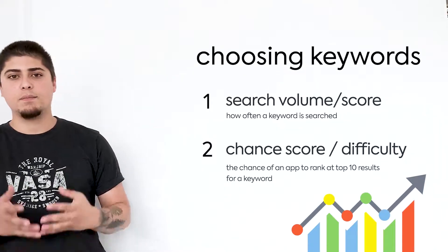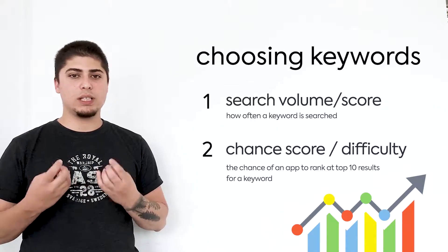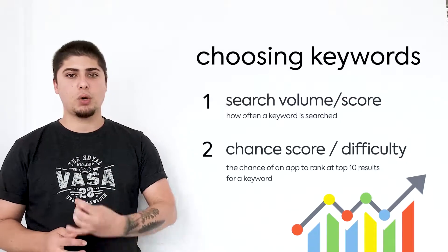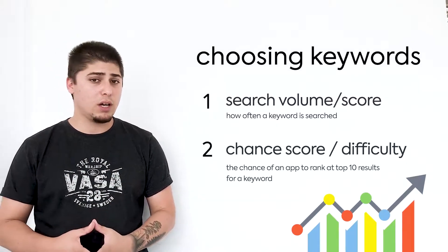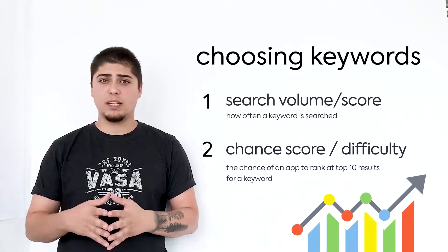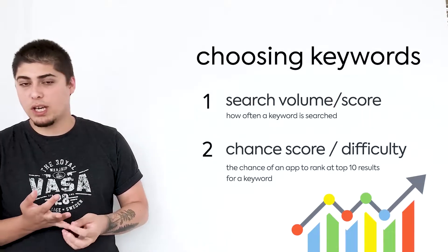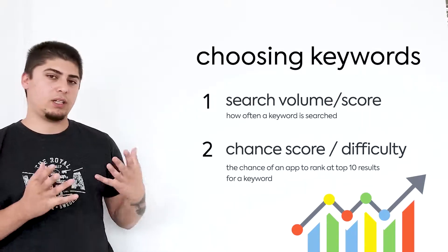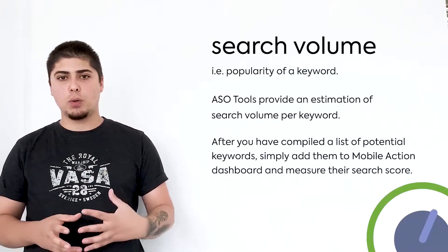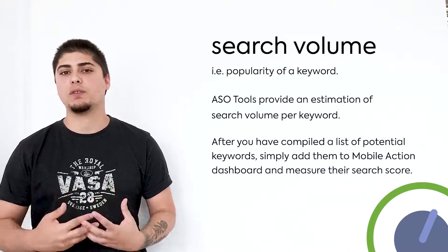After that, you'll need some tools to guide you through this, which will give you important keyword metrics to assist you in deciding which keywords to go for. Similar to search engine optimization, we can decide on keywords by their search popularity — you can call this search volume, or a search score. This metric shows you how often people search for a keyword.